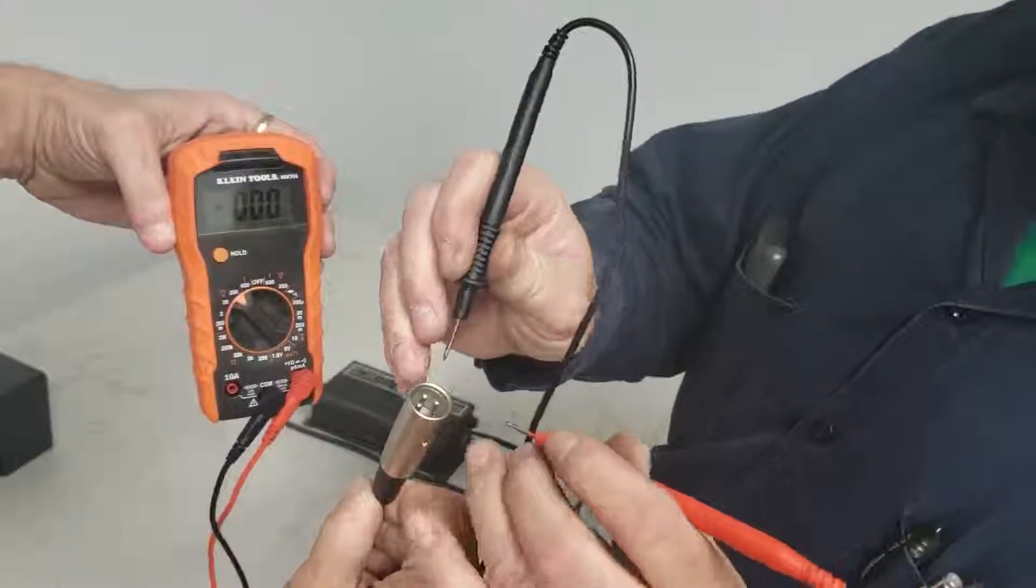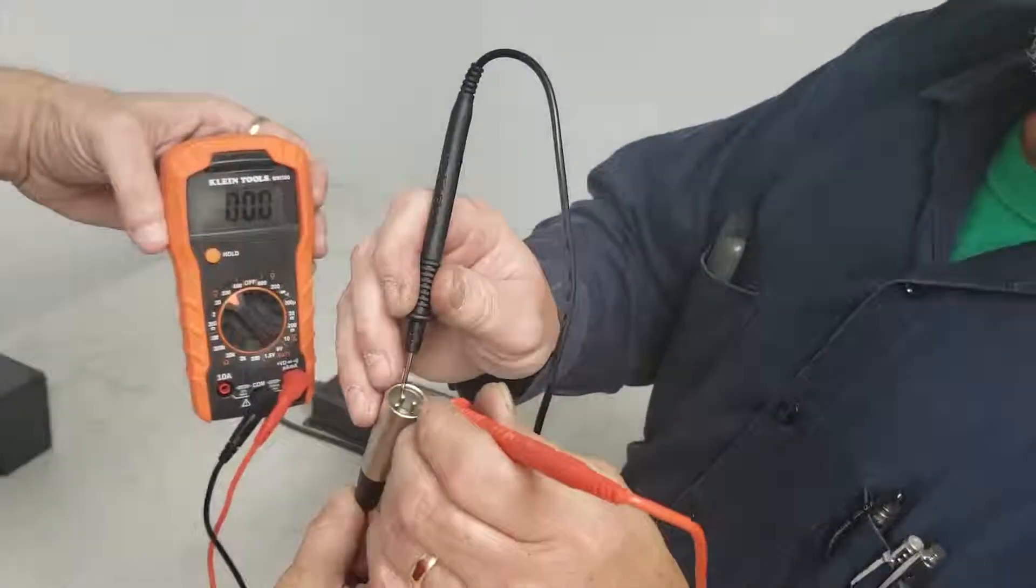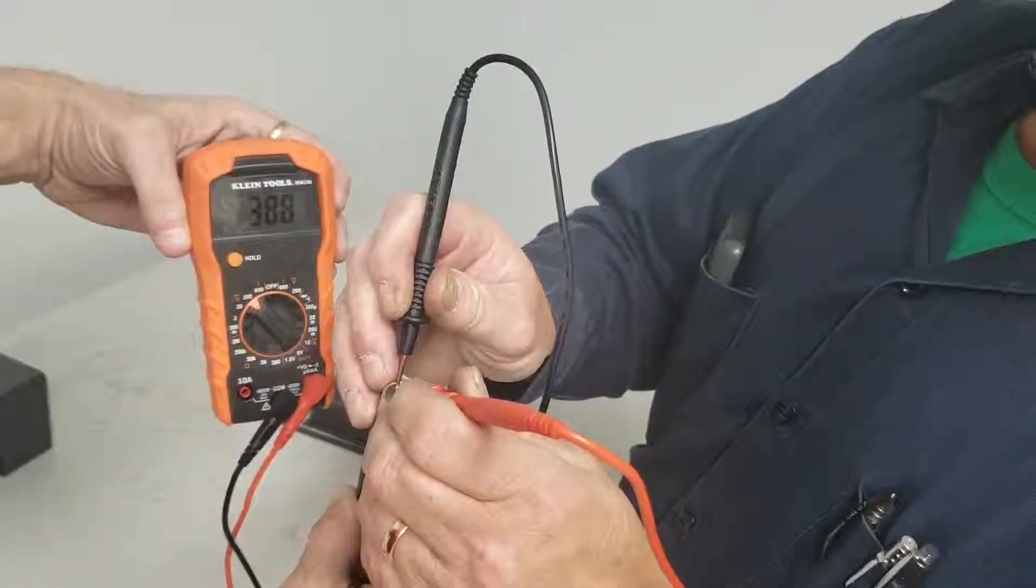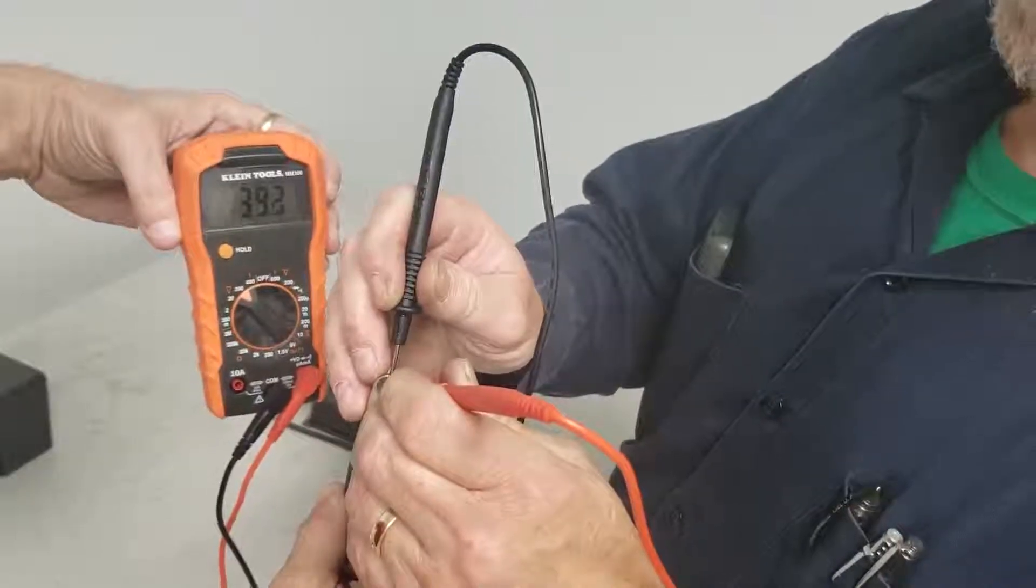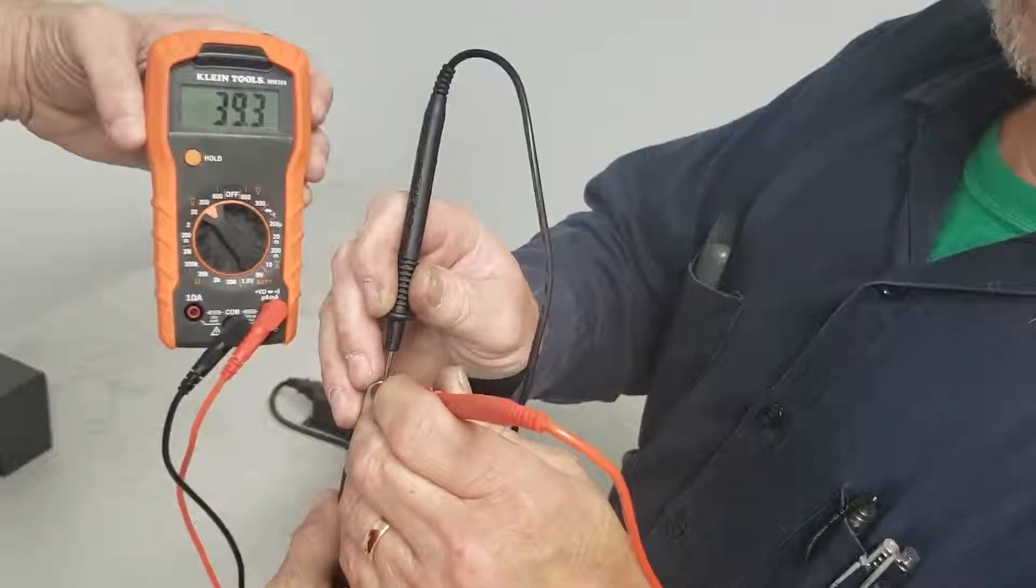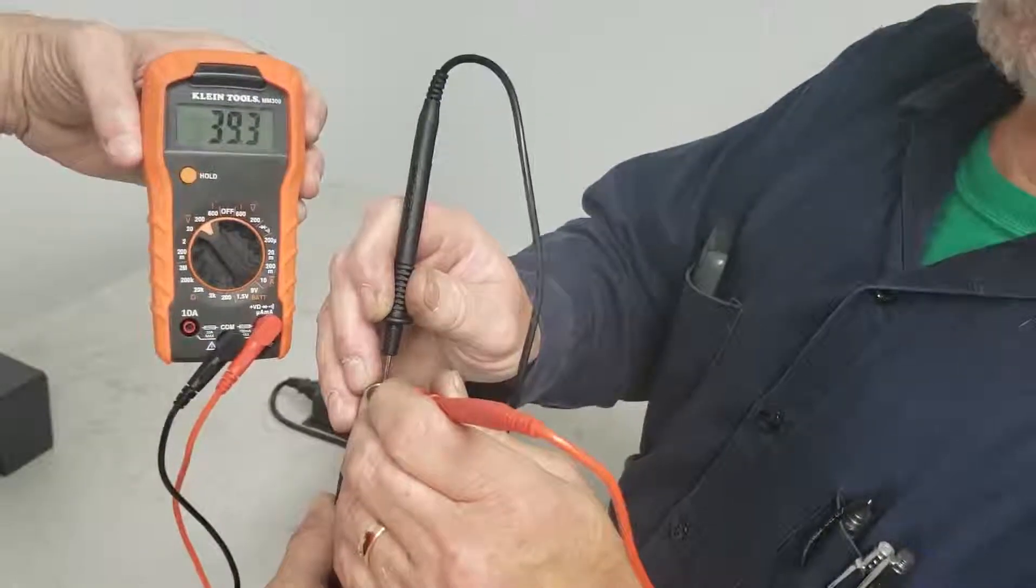Now we're going to do this again with our negative holding here, our probe touching that one. As you can see here on the voltmeter, we're showing 39.3 volts, which is acceptable.